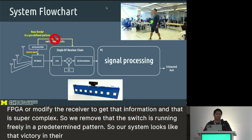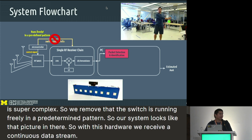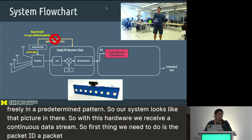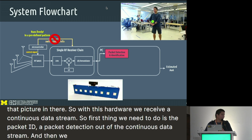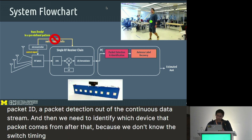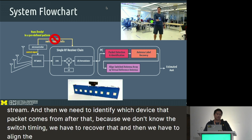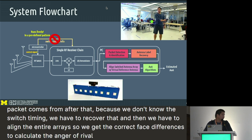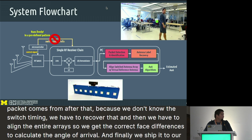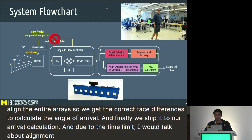With this hardware, we receive a continuous data stream. First, we do packet detection out of the continuous stream, then identify which device the packet comes from. After that, because we don't know the switch timing, we have to recover it. Then we align the antenna array segments to get correct phase differences to calculate the angle of arrival, and finally feed it to our angle of arrival calculation. Due to time limits, I'll focus on alignment to the reference antenna; for the rest, see the paper.